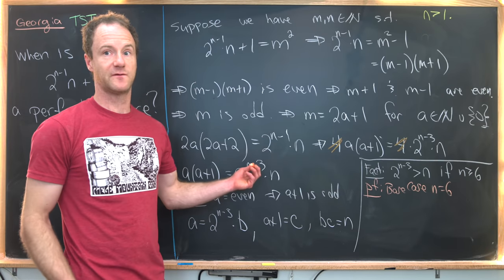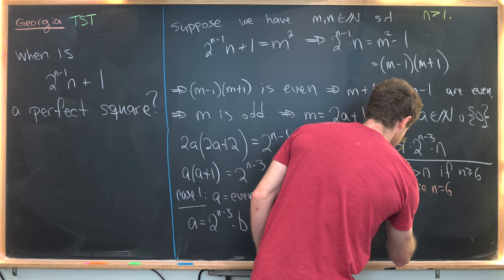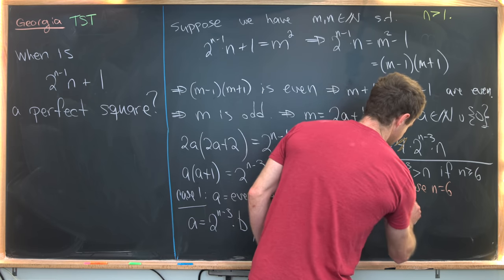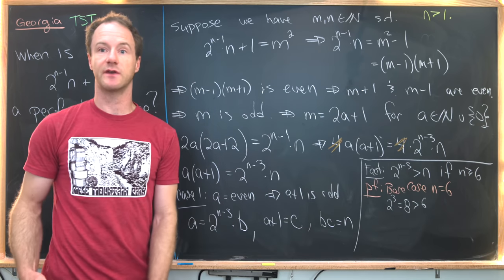But if we plug n equals 6 into that, we get 2^(6-3). That is 8. Well, it's 2³, which is 8. 8 is clearly bigger than 6. So we're good to go there.